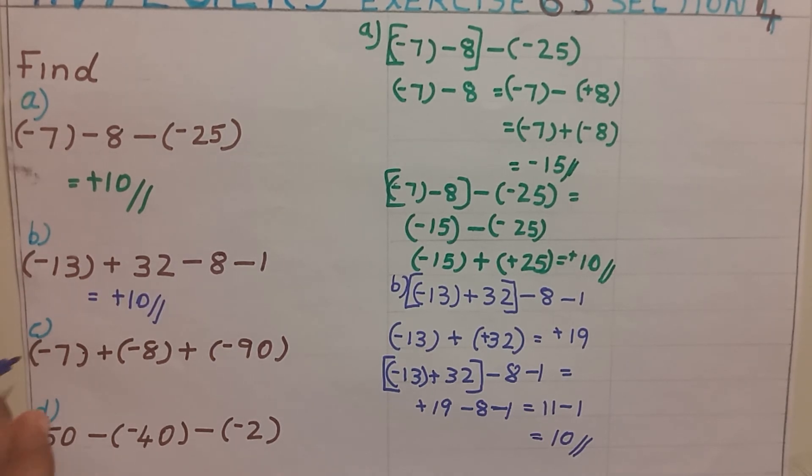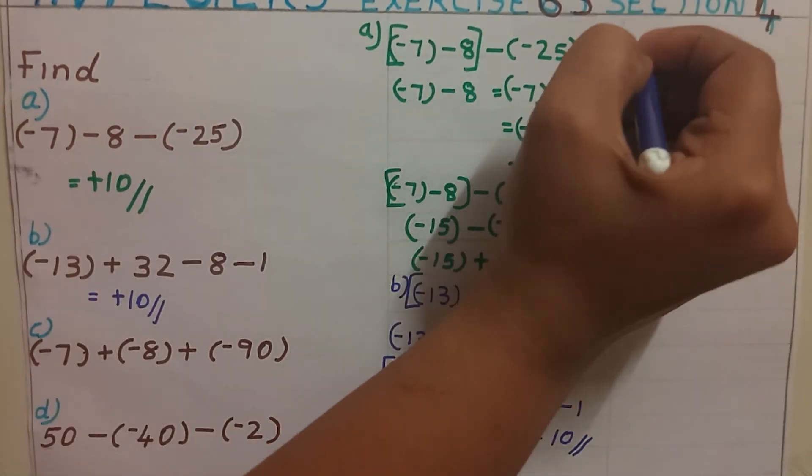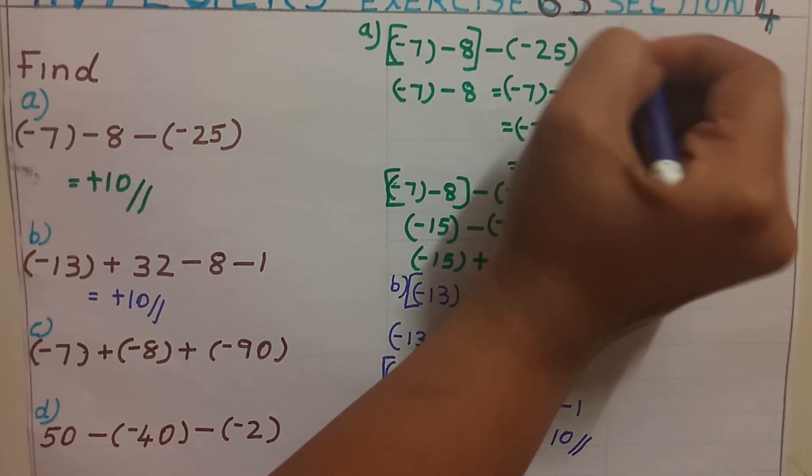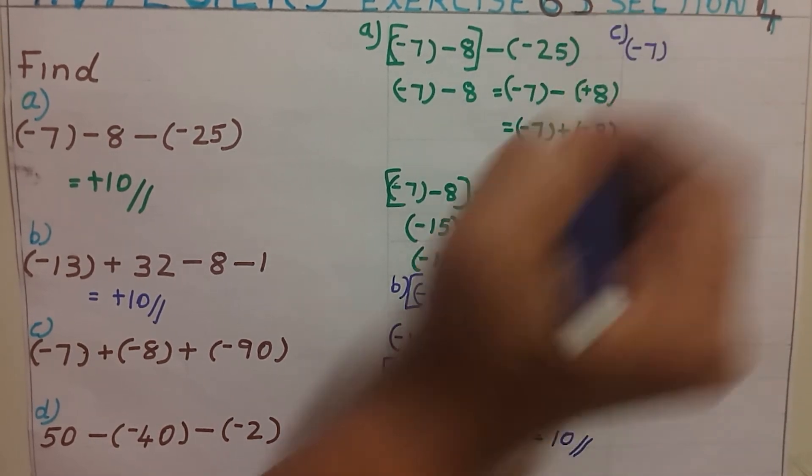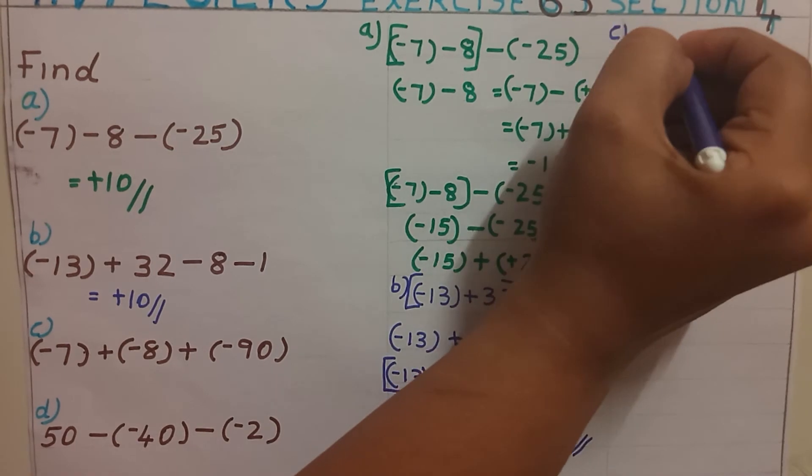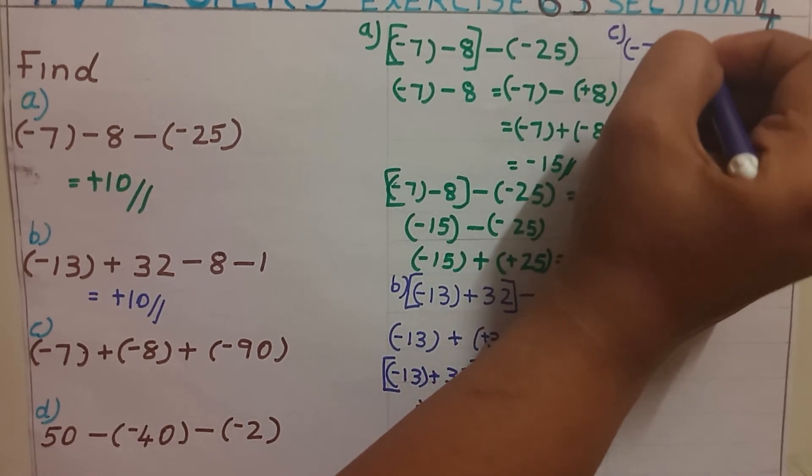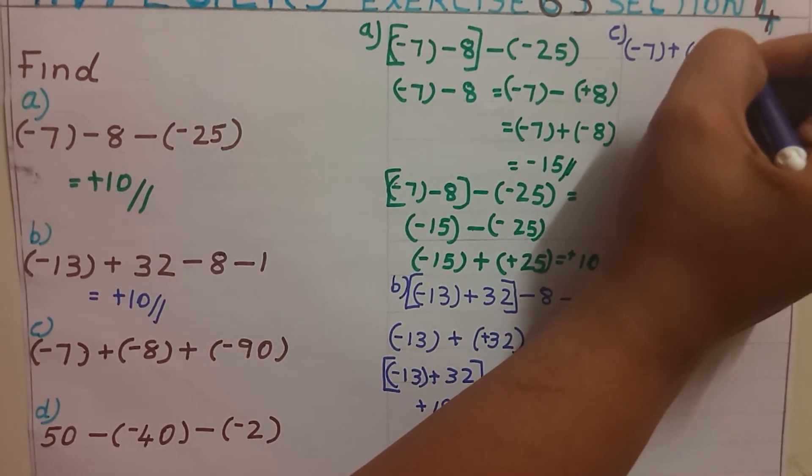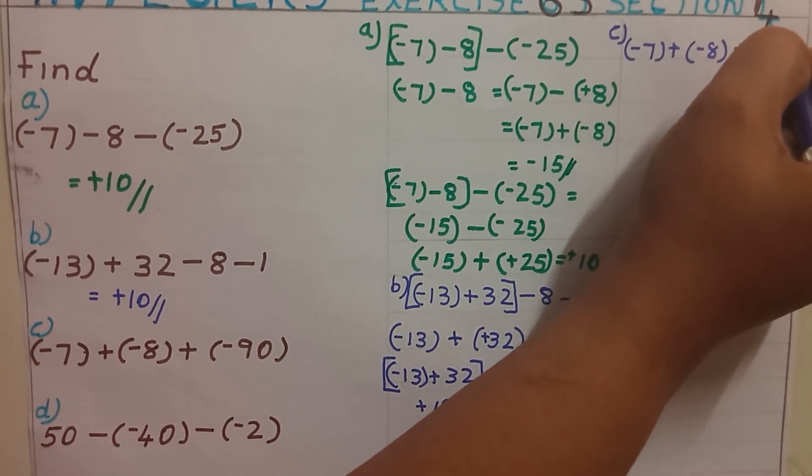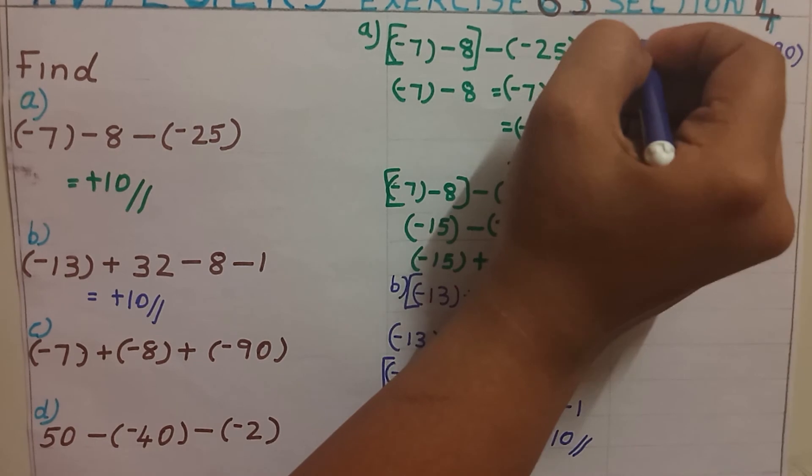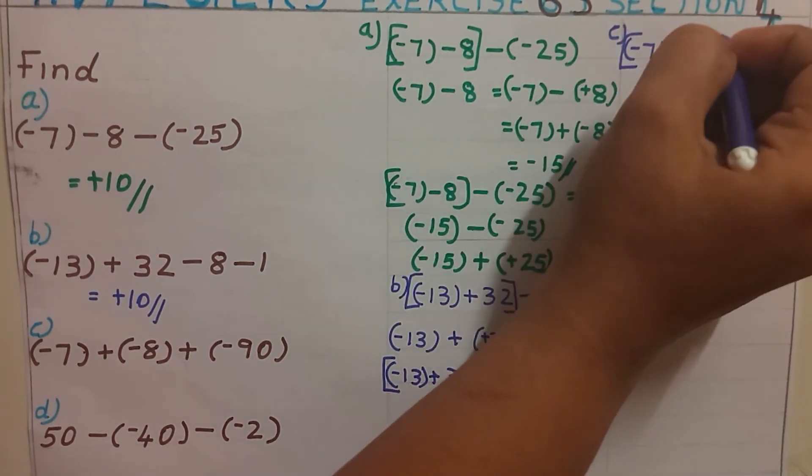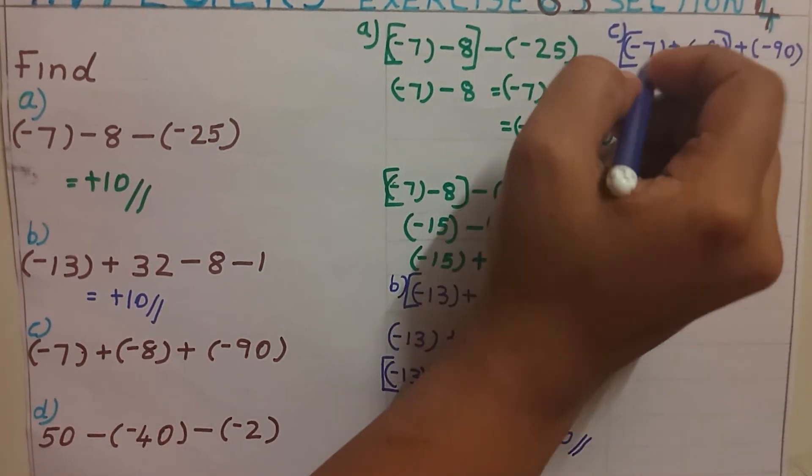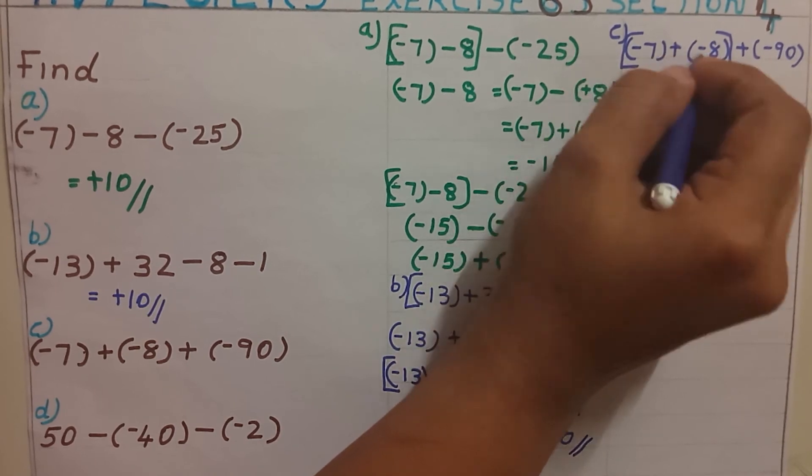Next question, question number C: minus 7 plus minus 8 plus minus 90. I am taking these two numbers together and I am going to find the value of these two numbers.